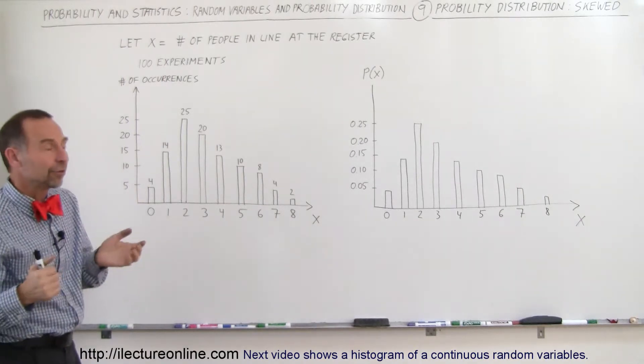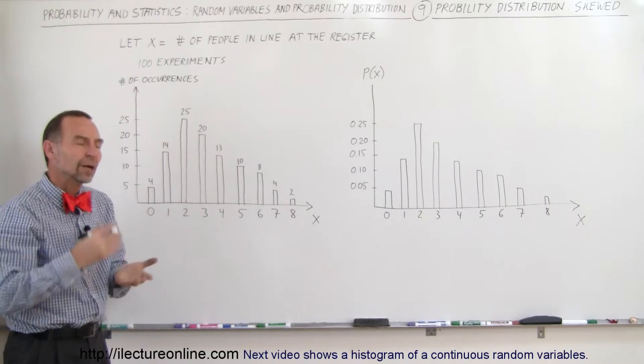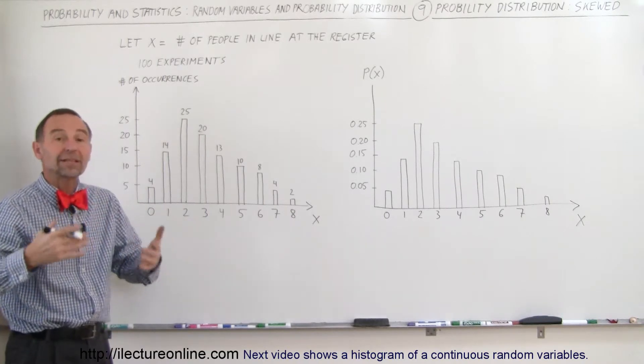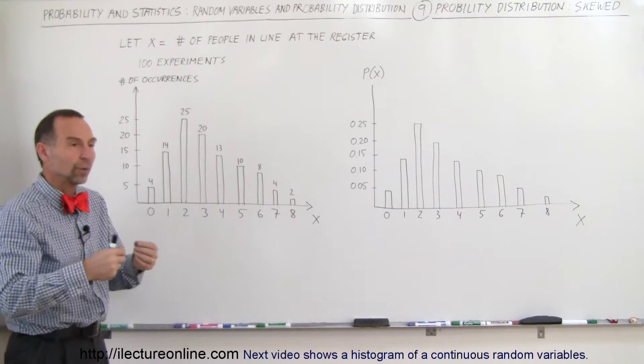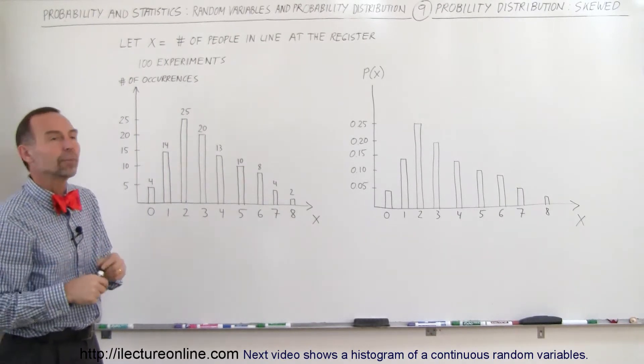This is an example where we have, let's say, a manager who works in a store, and he wants to know how many people typically stand in line waiting to pay at the register. So we have one person paying, and is there somebody standing in line waiting to pay?